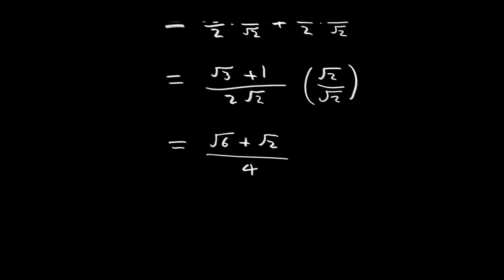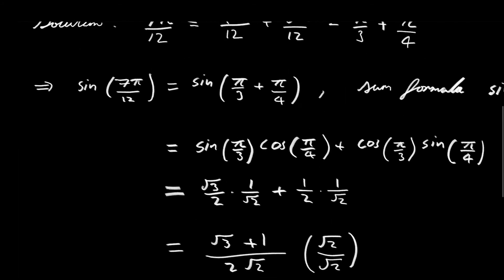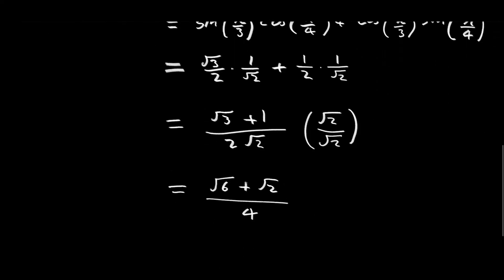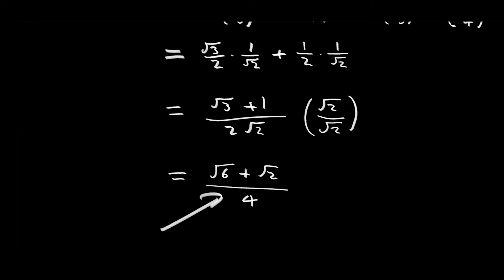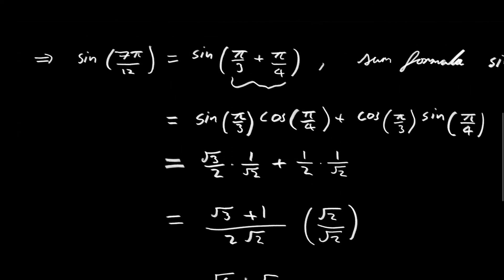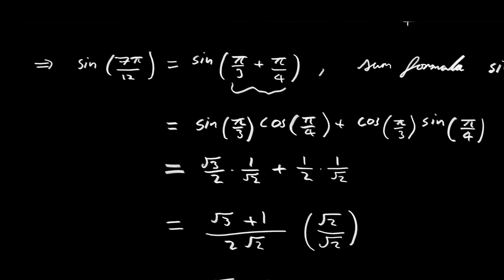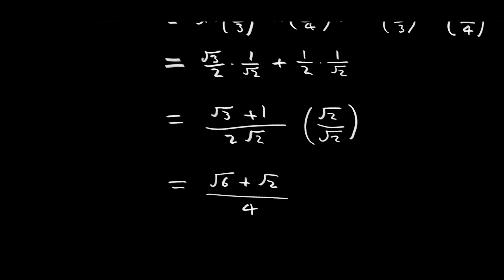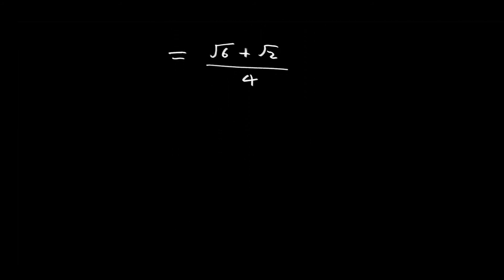So even though 7π over 12 is not one of the special angles, we managed to relate it to two special angles and were able to find an exact value for the sine of 7π over 12. Now let's do an example with one of the difference formulae.